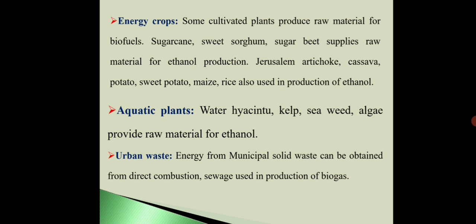The next source is aquatic plants. Water hyacinth, kelp, seaweed, and algae provide raw material for ethanol. The next source is urban waste. Man produces a lot of waste material in daily life, and municipal corporations collect this solid waste. Energy from municipal solid waste can be obtained from direct combustion. Sewage waste is also used in the production of biogas.